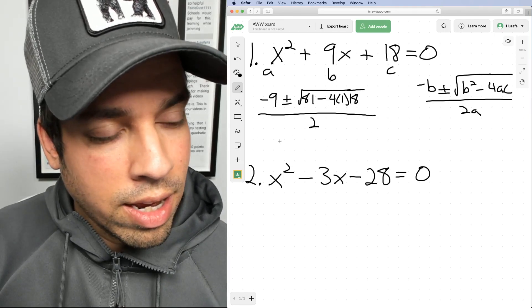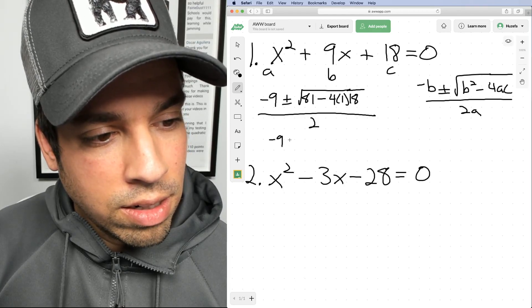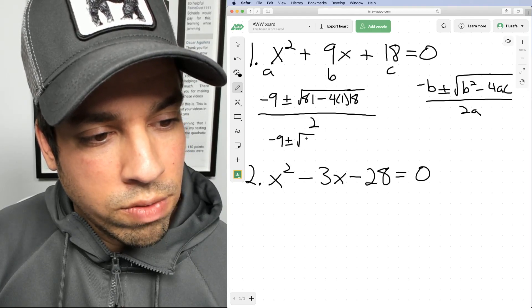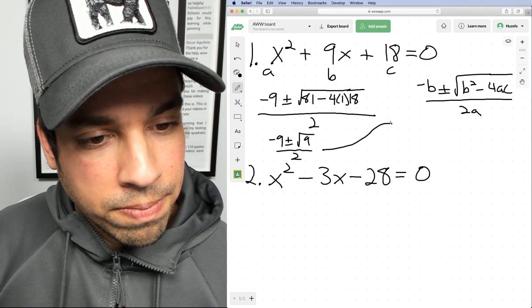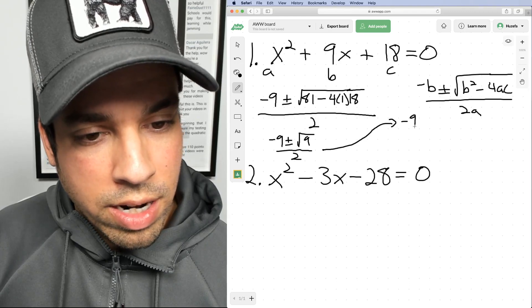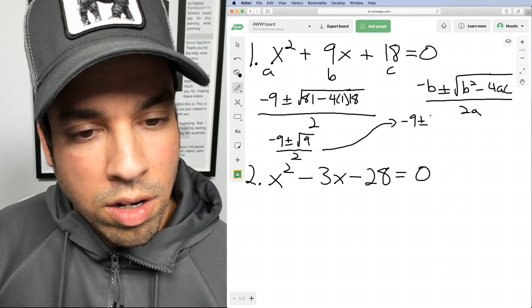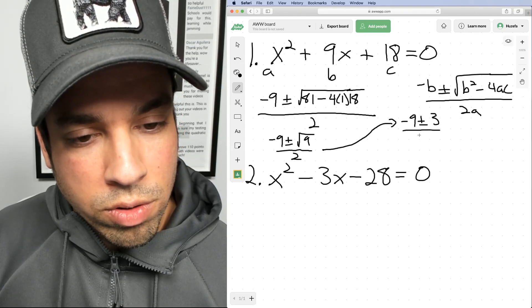So I'm gonna rewrite this as negative nine, plus or minus the square root of nine over two. Now what is the square root of nine? It's of course three, so we got negative nine, plus or minus three over two.